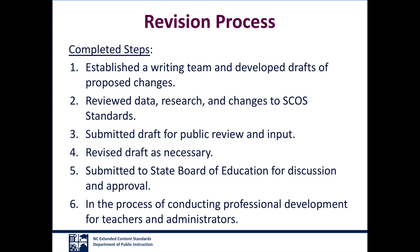The Department of Public Instruction started the revision process by establishing a writing team tasked to review data, current research, and the changes made to the standard course of study for all children in North Carolina public schools. This review was conducted with an understanding that federal policy requires alternate standards to differ in complexity from grade-level achievement standards, but also align with the state's academic content standards, promote access to the general curriculum, and reflect professional judgment of the highest achievement standards possible for students with significant cognitive disabilities. The committee revised and submitted a draft for public review, and final changes were submitted to the State Board of Education for their discussion and approval.